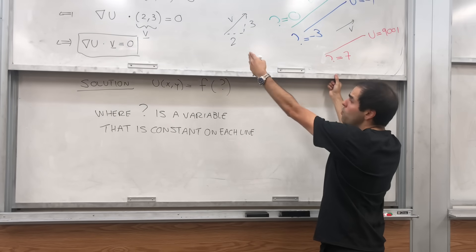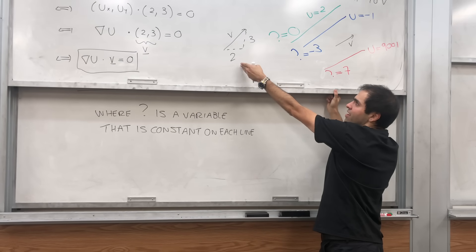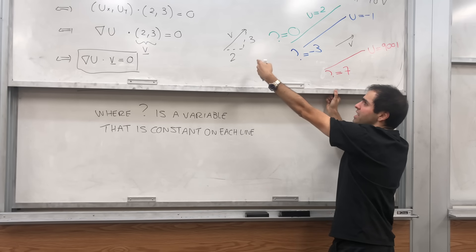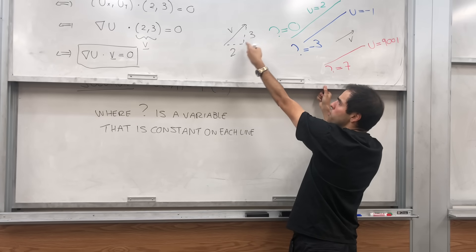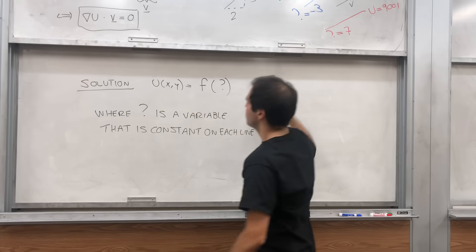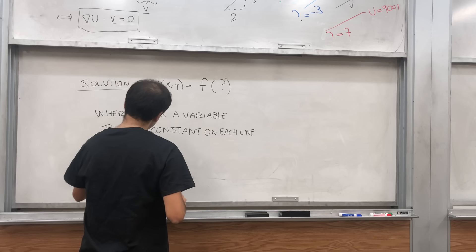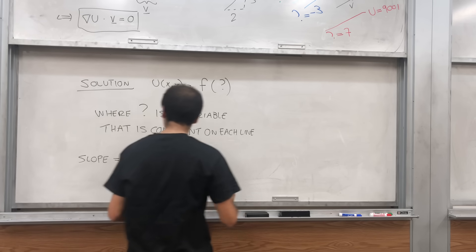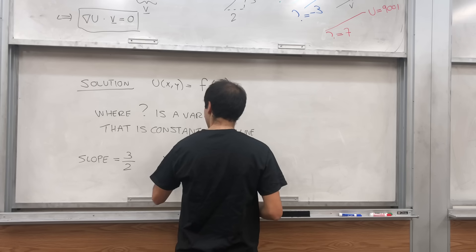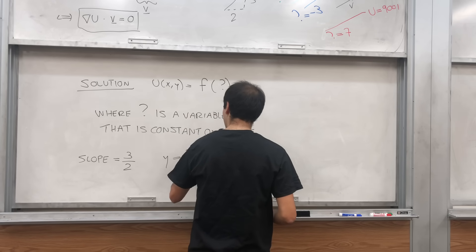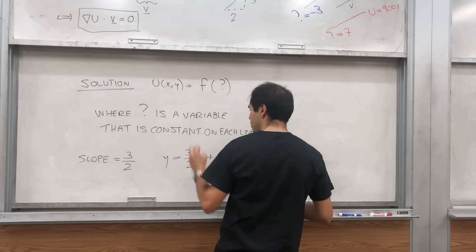So what is the slope here? The slope of this line is 3/2. Slope equals rise over run, 3/2. So what is the equation of this line? Each line, y equals 3/2 x plus c.